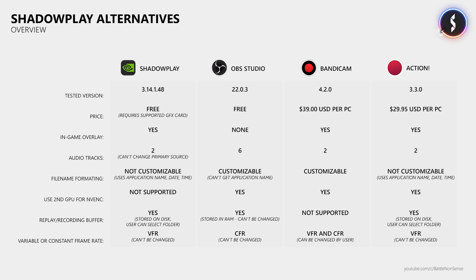Action costs a bit less than Bandicam. It also provides an in-game overlay and its recordings can only have up to 2 audio tracks. You can record a third audio source as a WAV file, however that does not work when the replay feature is used and it is a pain to sync these files later. Filenames can't be customized, but Action uses the application name, recording date and time for the filename. Since version 3.3.0 you can offload the video encoding to a second graphics card, which helps reduce the performance impact. However, Action only records using a variable frame rate, which can cause audio and video sync issues.